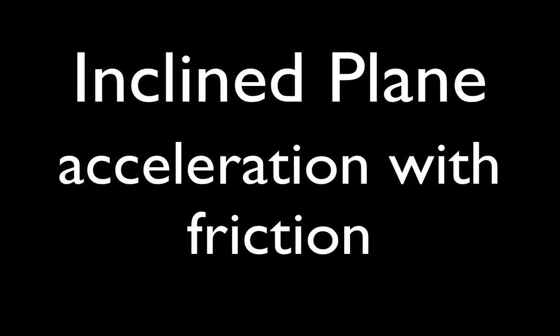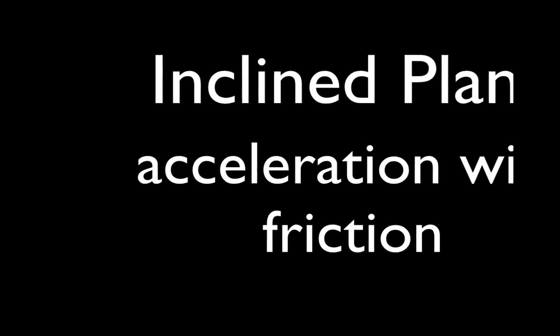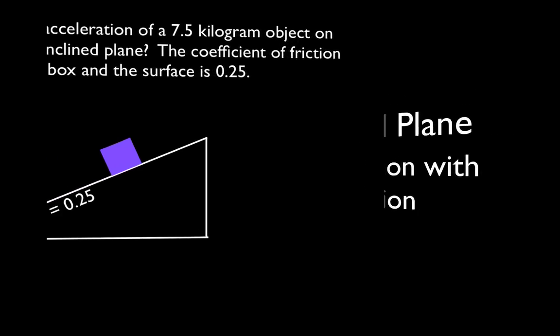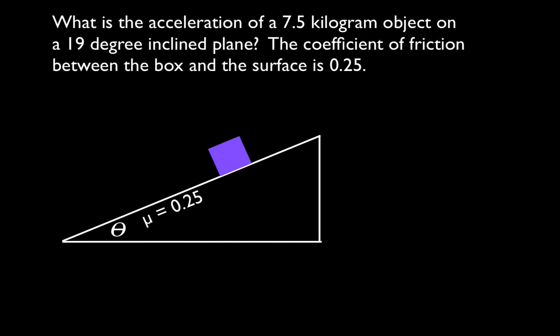In today's video, I'm going to go over a problem where we determine the acceleration of an object moving down an inclined plane with friction. We have a 7.5 kilogram object accelerating down a 19 degree inclined plane. There's a coefficient of friction between the object and the surface of 0.25, and we want to know what the acceleration of that object is.